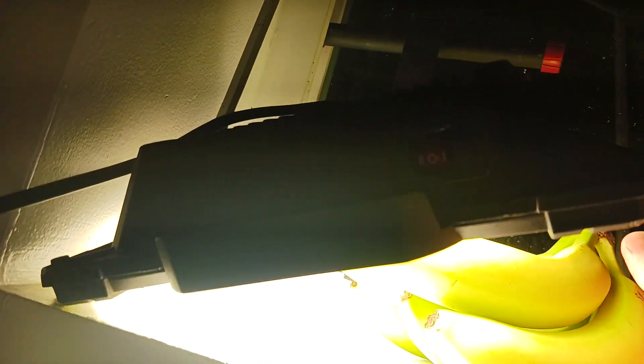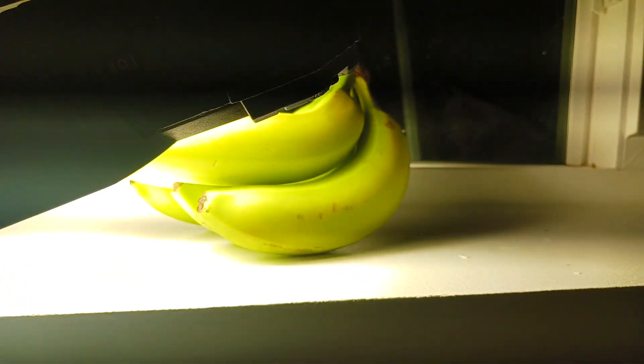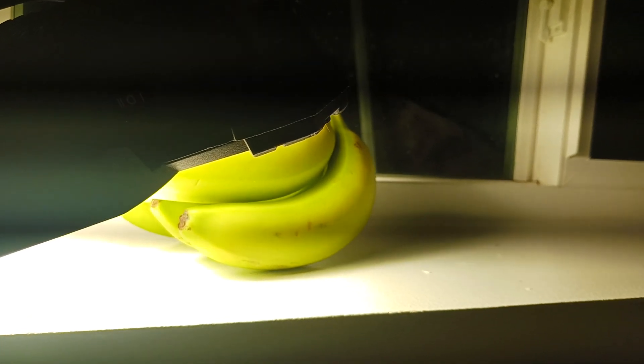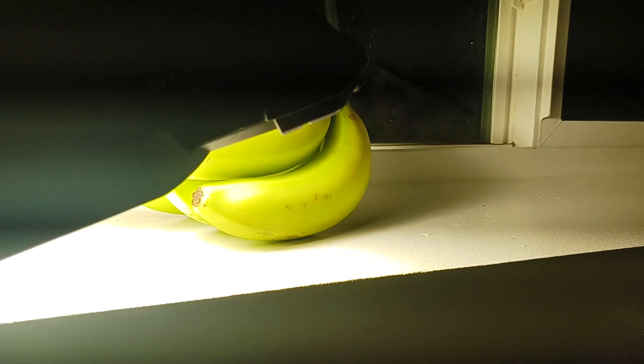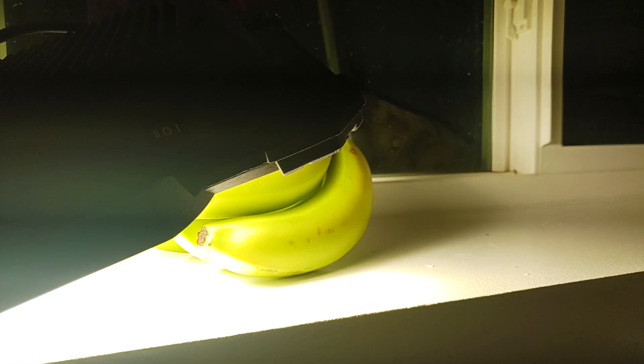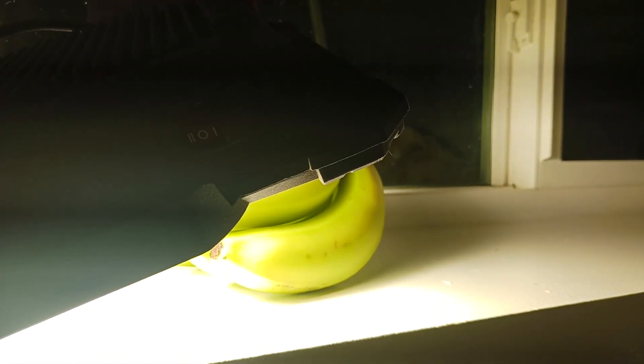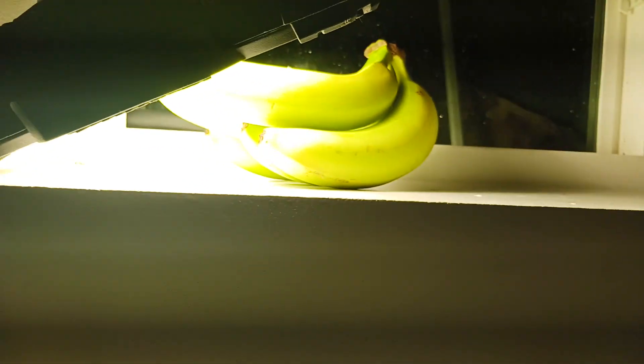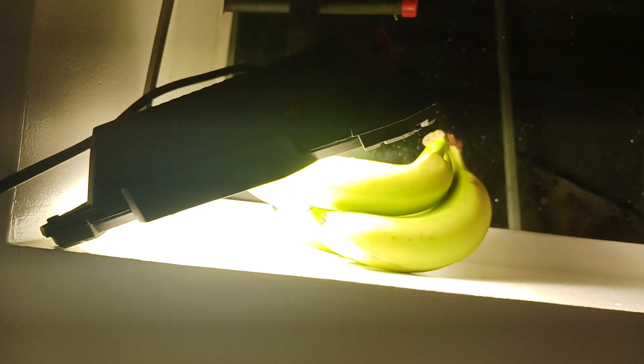And then I just come back in about an hour because the work light could get pretty hot and you don't want to melt your bananas. They won't melt, but they could get a little dry if it's actually hot enough. But yeah, that's how you ripen your bananas with a work light.